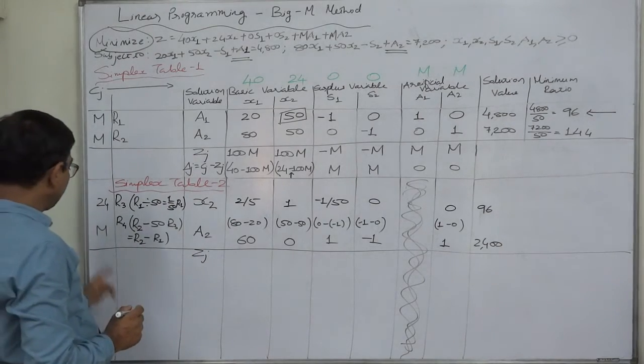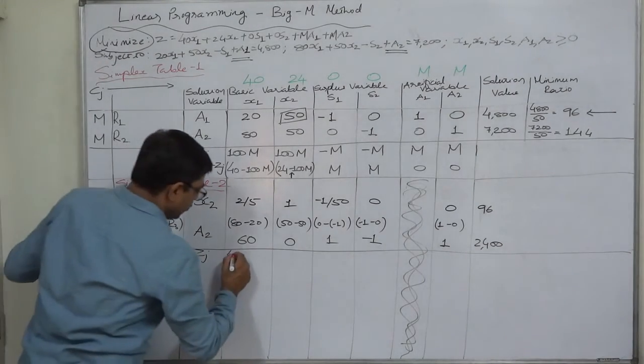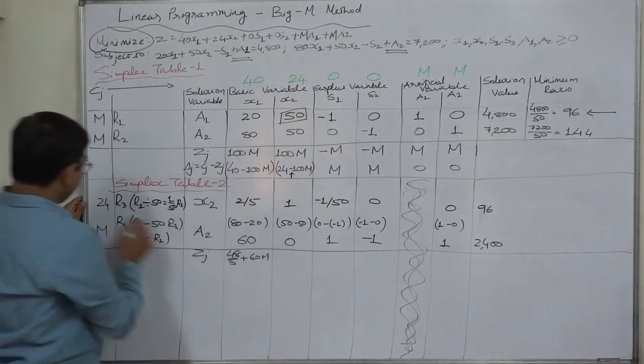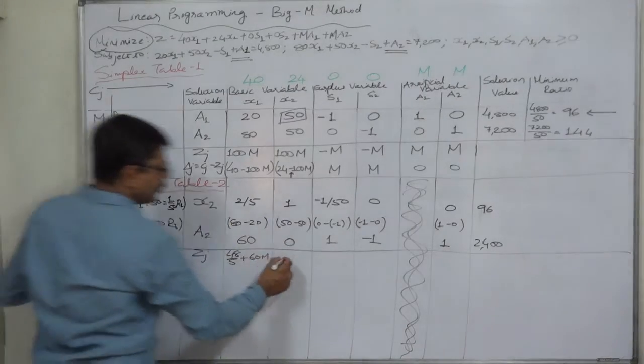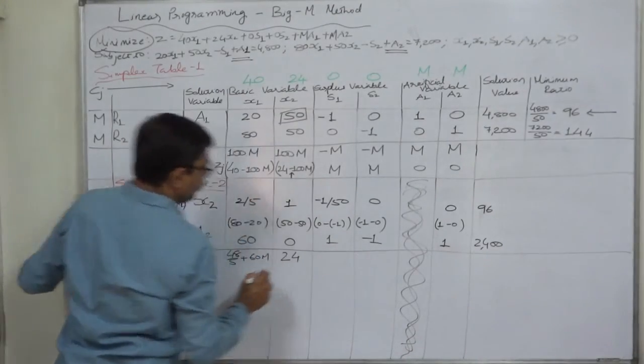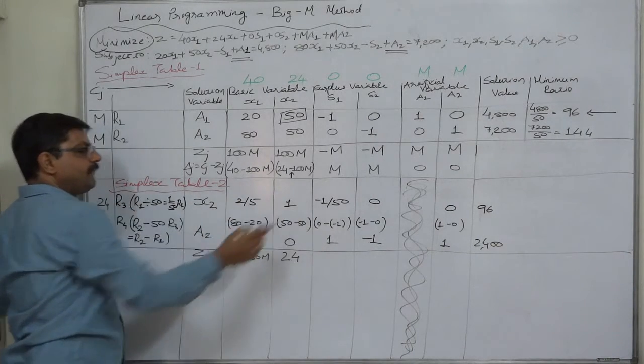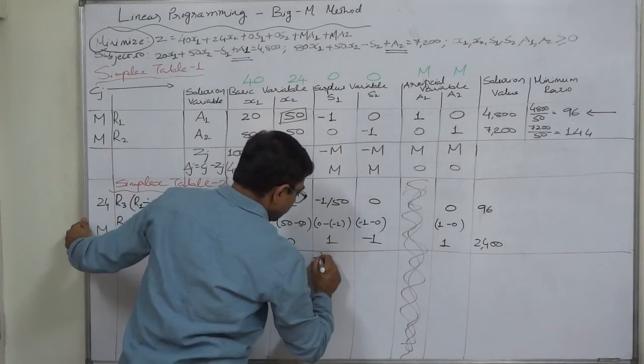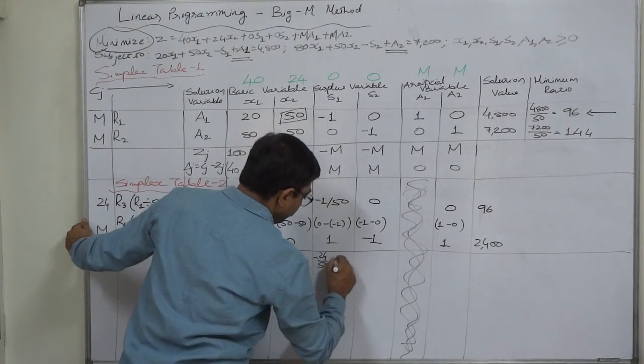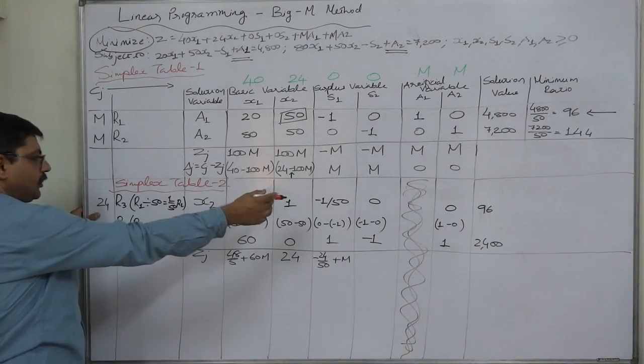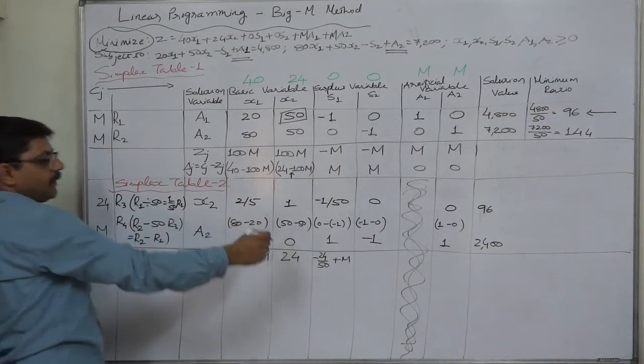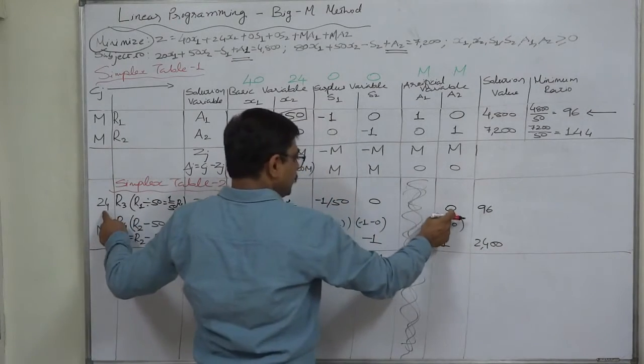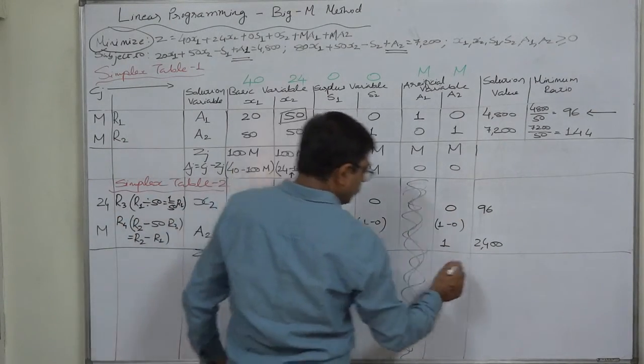Now we can write zj values. 24 into 2/5 is 48/5 plus M into 60, that's 60M. 48/5 plus 60M. Similarly, 24 into 1 is 24. 24 into minus 1/50 is minus 24/50 plus M. 24 into 0 is 0, M into minus 1 is minus M. 0 plus minus M is minus M. 24 into 0 is 0, M into 1 is M. 0 plus M is M.